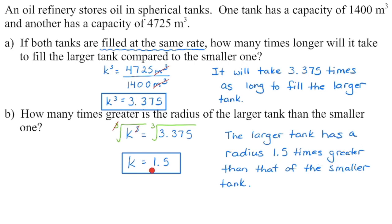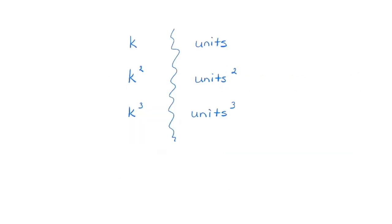Because this value is larger than one, we know it's going to be greater. Remember to watch your units. We typically think of scale factor as the linear scale factor. But if we're dealing with area — square units — we're going to square the scale factor to get how many times larger or smaller that new area is. If we're dealing with volume — cubic units — we're going to cube the linear scale factor to figure out how many times larger or smaller our new volume is.